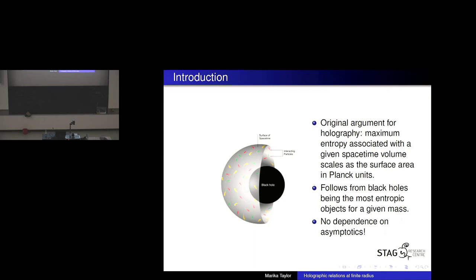Long before Maldacena wrote down the AdS-CFT conjecture, people like 't Hooft and Susskind formulated holography from black hole physics — from considerations of entropy and the idea that black holes have the maximum entropy in a given spacetime volume. The arguments they used have no dependence on asymptotics. So one of the guiding questions for me and my group over the last 20 years has been: can we write down a formulation of holography which works in general, without insisting on anti-de Sitter asymptotics?